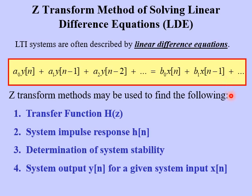We're going to show in this video how Z-transform methods can be used to find the following for the system. First, we're going to find the transfer function by inspection. From the transfer function, we can find the system impulse response H of n. We're going to determine the system's stability — is it stable or not? And finally, we will solve the difference equation using Z-transform methods, which gives the system output for a given input x of n.